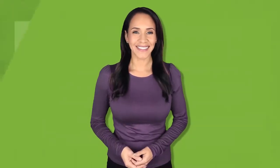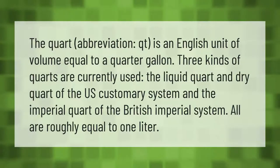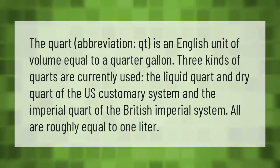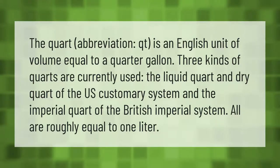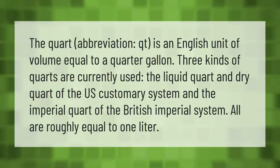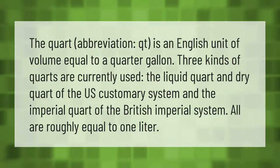The quart abbreviation Qt is an English unit of volume equal to a quarter gallon. Three kinds of quarts are currently used: the liquid quart and dry quart of the U.S. customary system, and the imperial quart of the British imperial system. All are roughly equal to one liter.